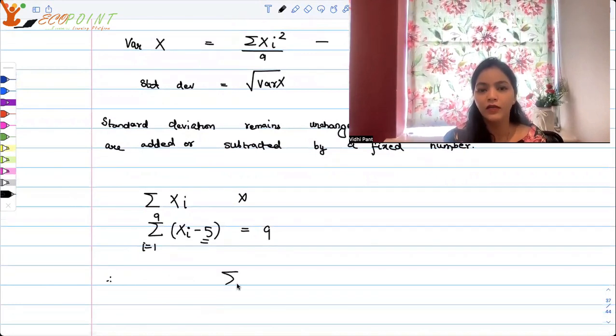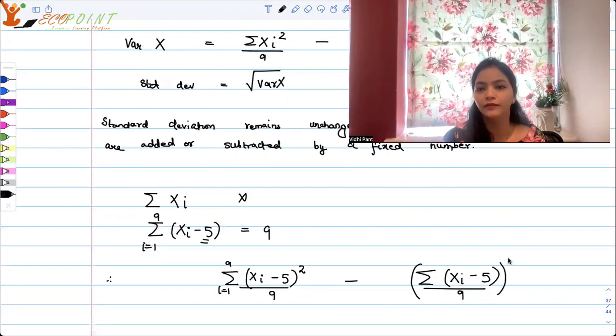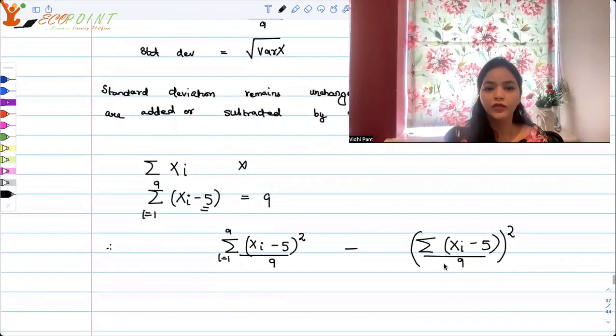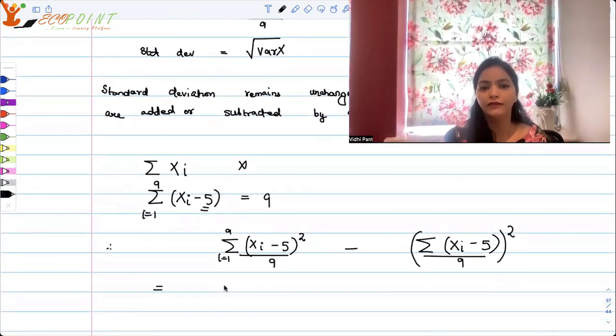Therefore, the required standard deviation is the square root of [summation(xi - 5)² upon 9, where i goes from 1 to 9] minus [summation(xi - 5) upon 9]² whole squared.